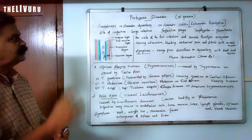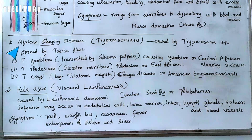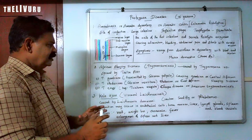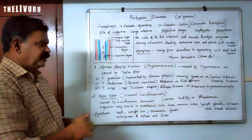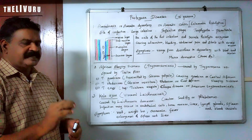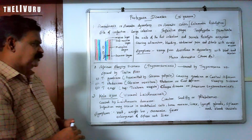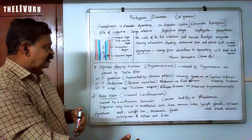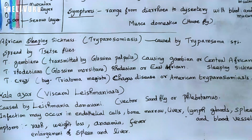That is all about amoebiasis. Now the second disease we are going to see is African sleeping sickness. The causative agent is Trypanosoma species.